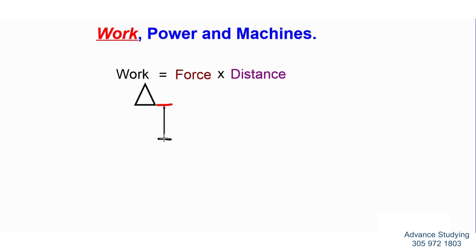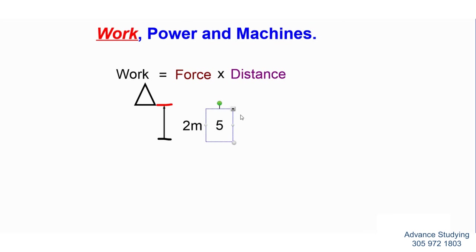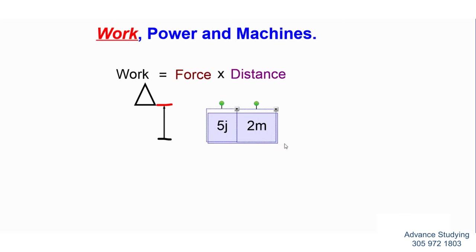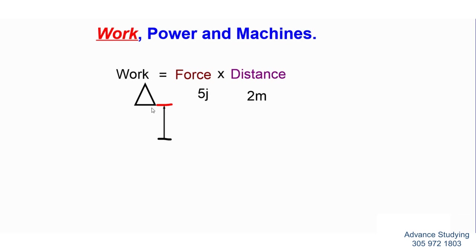Assuming that the distance was 2 meters, and the force you used to lift the object was 5 newtons, you simply multiply the force — 5 newtons — times the distance, and that gives you work. The force times the distance gives you work.